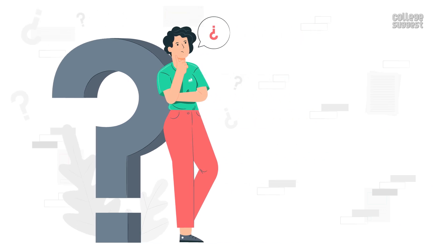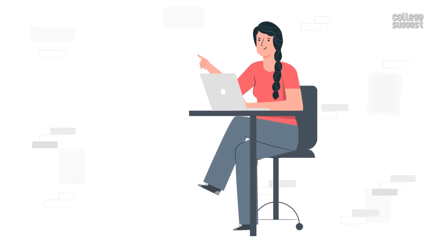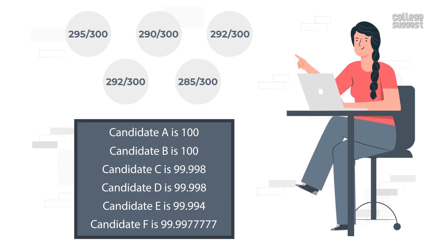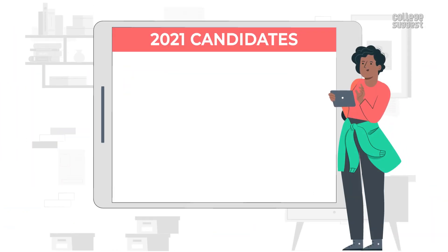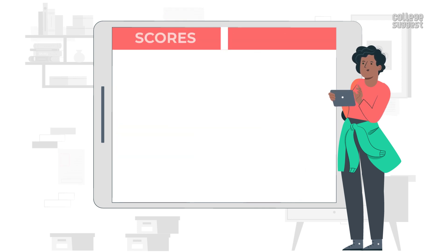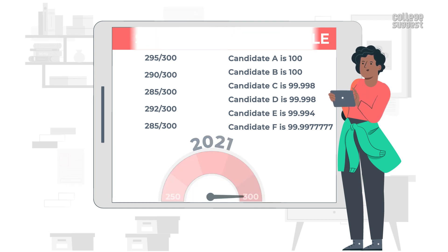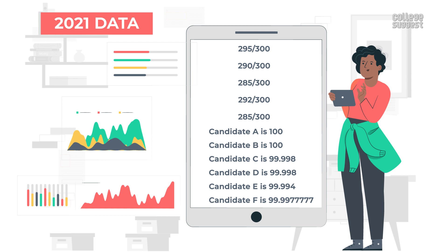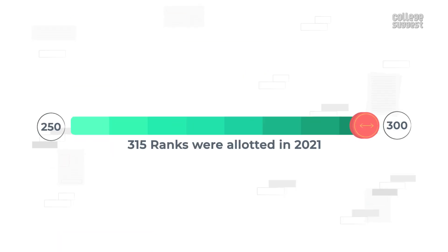If you have any doubts, do comment below and we will get back to you with appropriate information. In summary, raw scores will be used to calculate percentile scores for candidates, and based on the percentile scores, ranks will be assigned to students. Let's look at the trend for 2021 for the ranks obtained by candidates. We are displaying scores and percentiles for a range of scores from 250 to 300 in 2021, within which 315 ranks were allotted.